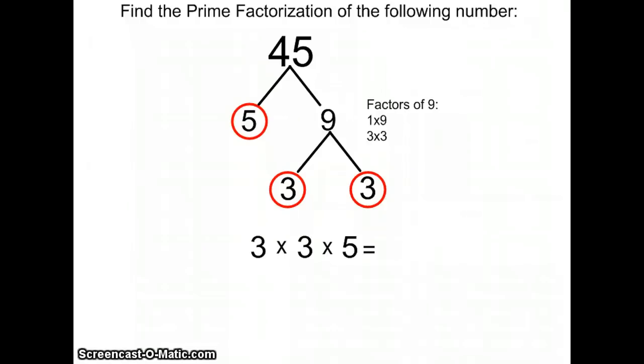The last thing you want to do before you complete this prime factorization is make sure that what you wrote for your product of your primes does give you a product of the number you're working with. So if I did this correctly, when I multiply 3 times 3 times 5, I have to get 45.